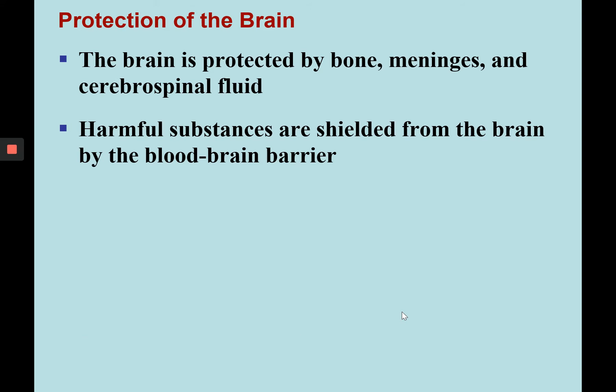Next, we're going to look at the protection the brain has. It has bone, connective tissue layers called meninges, and cerebrospinal fluid. All of these protect the brain, shielding it from harmful substances and any substance that could disrupt the blood-brain barrier.